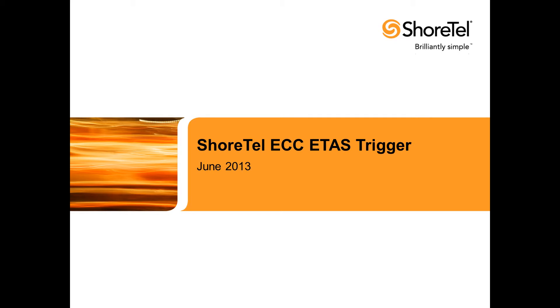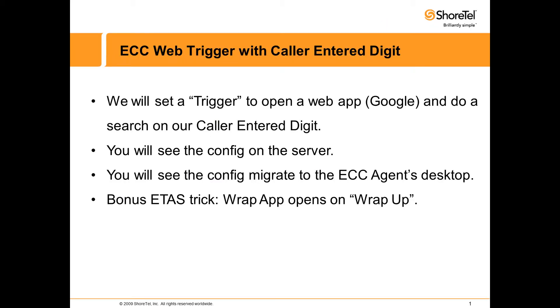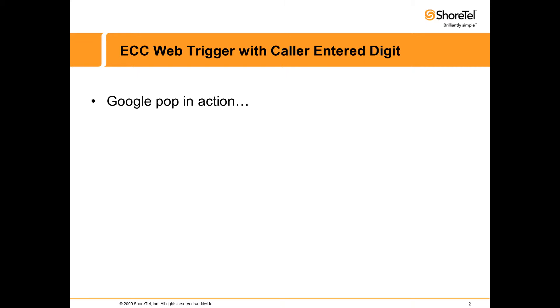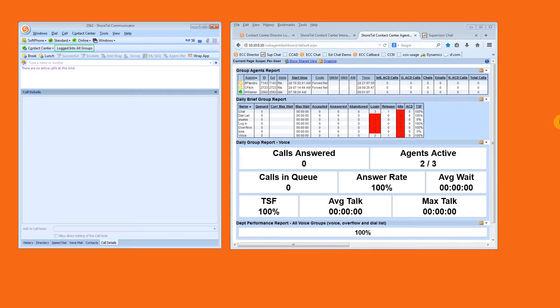We're going to show a simple ECC ETHOS trigger based on a Caller Entered Digit. You'll see configuration on the server and how that moves to the agent desktop. We're also going to show you the WRAP app. Let's take a look at a Google Pop.